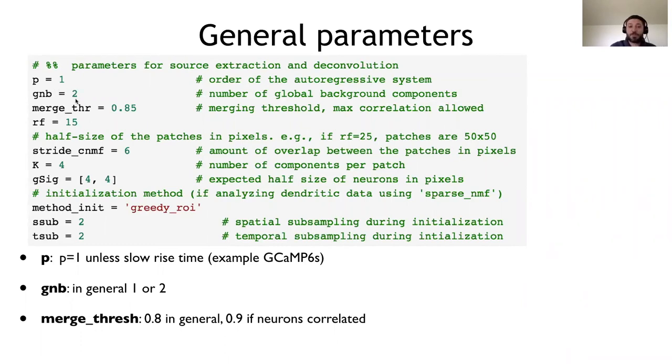GNB is the number of background components. If you have a complex neuropil, you want to use a number of two or three, don't exaggerate. Otherwise you will start englobating neurons. Merge threshold is basically the correlation, the minimal correlation that is required before we take two neurons and we put them together into a single one. Because sometimes of course we take only chunks of neurons. RF, I already explained to you. G-sig is the half size of a neuron, the expected size. And I don't think you want to touch any of these results, but just summarizing again, P you want to use P equal one, unless you have a slow rise time. GNB you want to use one or two, depending on how complex is your background and merge threshold 0.8.